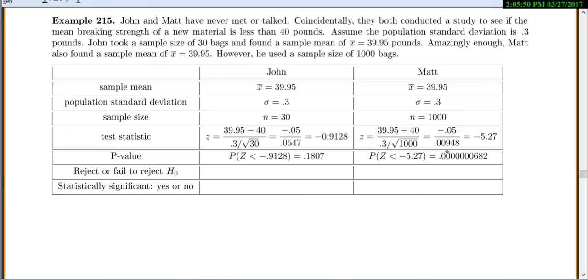So, now you can see here where I came through and found the test statistic. So, John's test statistic is negative 0.91. Matt's is negative 5.27. That's a big difference, right? And then when you go through and you find your p-value, this p-value is 0.18. And this p-value is 0.0000682. That's a huge difference in our p-values. Okay, and now let's see what our conclusions are.